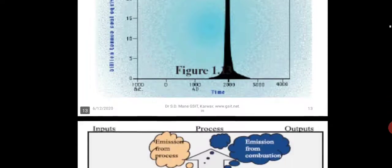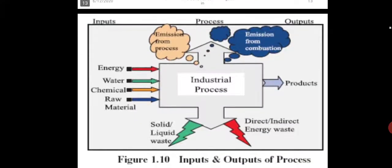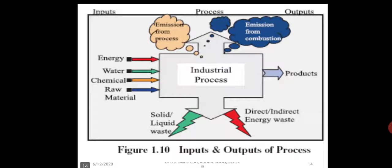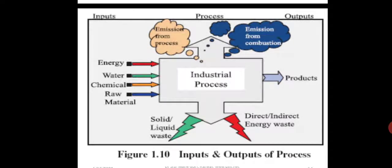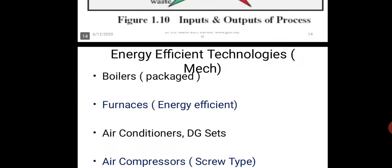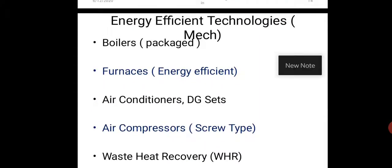When we look at energy audits for industries, we see the industrial process in the center: on the left are the inputs — energy, water, chemicals, raw material — and on the right are the products. In this process there are emissions from combustion, emissions from the process, solid waste, and indirect energy waste. We study the input and output of the process in any industry.